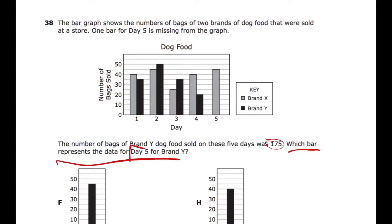We know that in total they sold 175 bags of Brand Y. So if we find the sum sold on days one through four and subtract that from 175, we get the missing value. The main skill being tested is reading a bar graph. On day one it's 35, day two is 50, day three is also 35, and day four is 20. Adding those up: 35 plus 50 plus 35 plus 20 gives us 140.